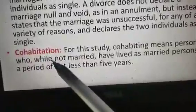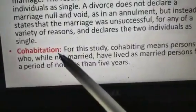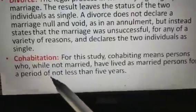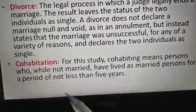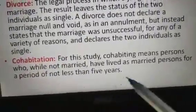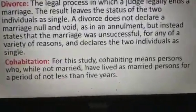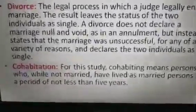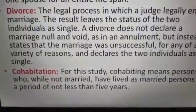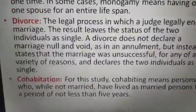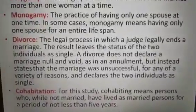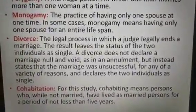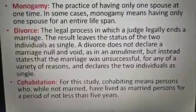The next term is Cohabitation. This terminology is practiced in many parts of the globe, especially in the era of modernization. Cohabitation means persons who, while not married, have lived as a married person for a period of not less than five years. We are now hearing about live-in partnerships, which are a part of cohabitation — pairs who live together but do not marry, living together for a long time.